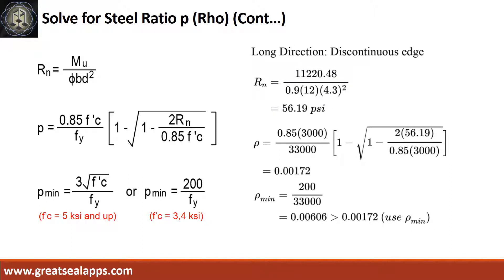Given long direction discontinuous edge moment equals 11,220.48 inch-pounds, resistance factor equals 0.9, b equals 12, and d equals 4.3. The beam design ratio Rn equals 56.19 PSI, and reinforcement ratio ρ equals 0.00172. Use ρ minimum of 0.00606.